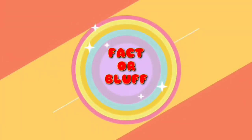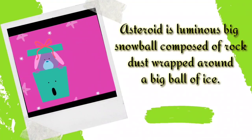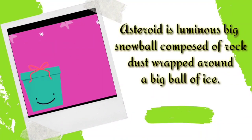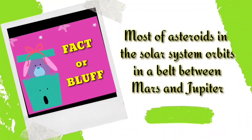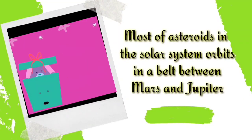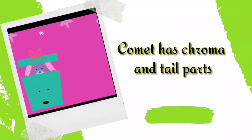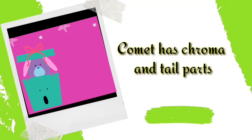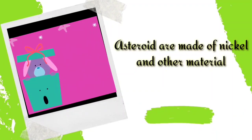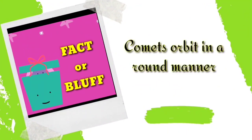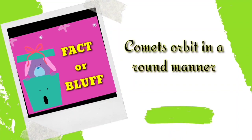Let us do a concept check using Fact or Bluff. Statement: An asteroid is a big snowball composed of rock dust wrapped around a big ball of ice. If you answered bluff, you are correct. Most asteroids in the solar system are found in a belt between Mars and Jupiter — fact, correct. A comet has a coma and tail — fact, correct. Asteroids are made of nickel and other materials — fact, correct. Comets orbit in a round manner — bluff, you are excellent.